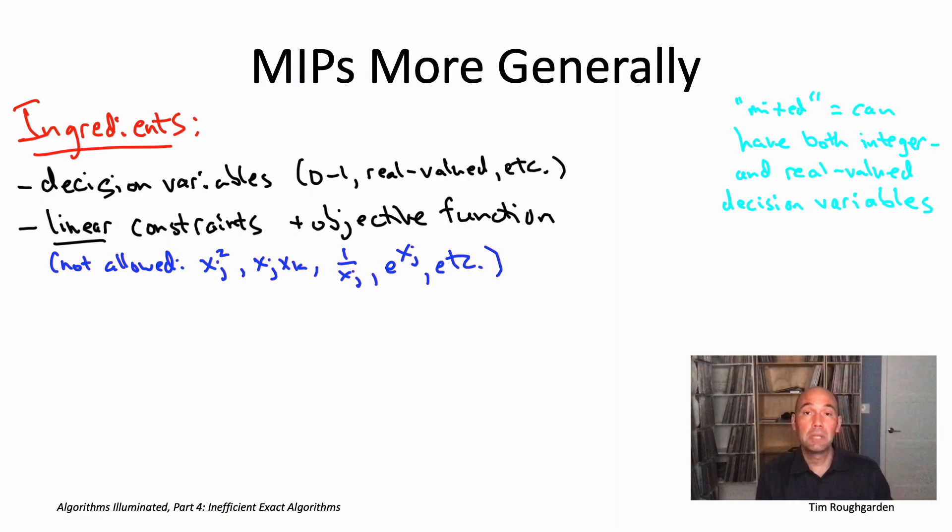So now I can formally define for you the mixed integer programming problem. Basically, you're given a description of a MIP and your job is to just find the best solution subject to the constraints.